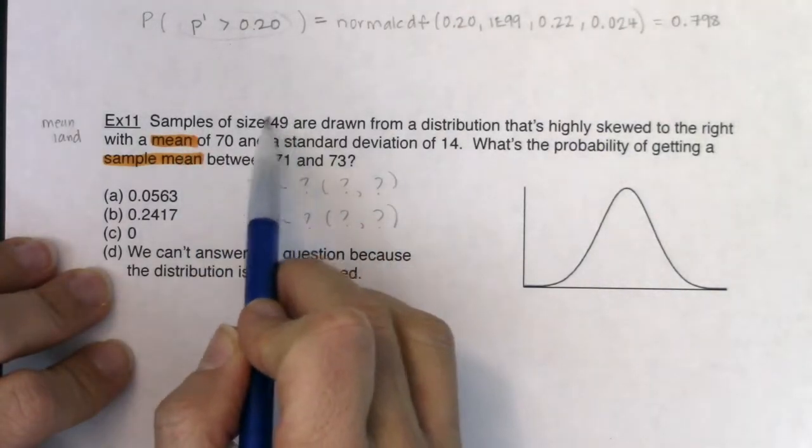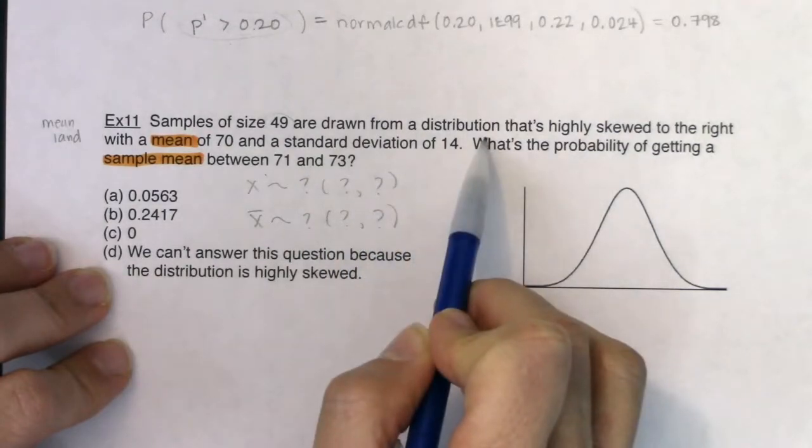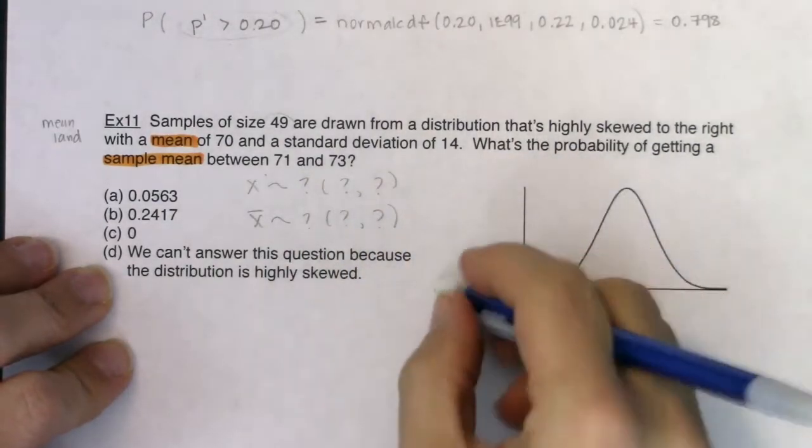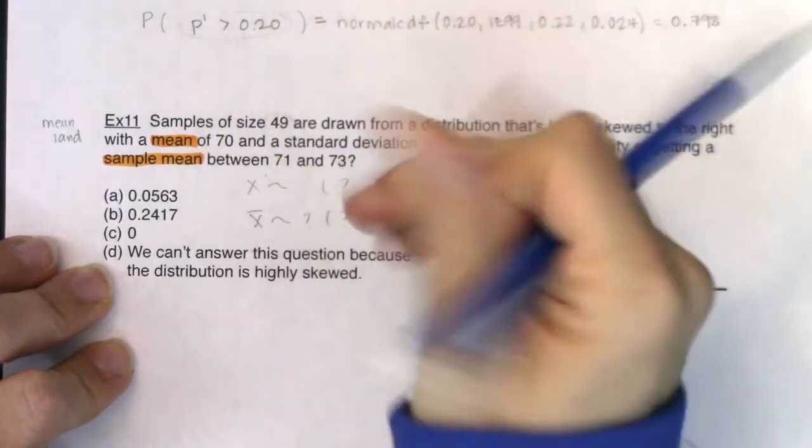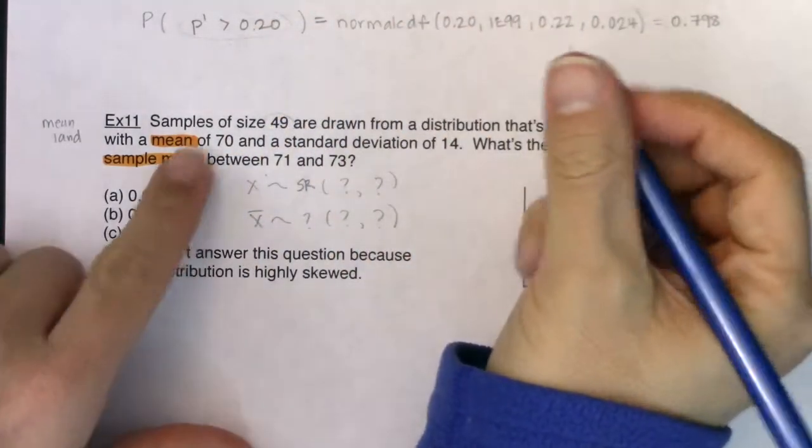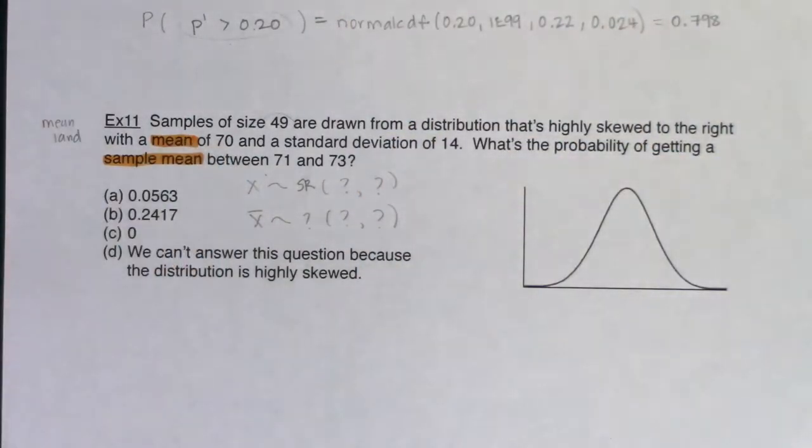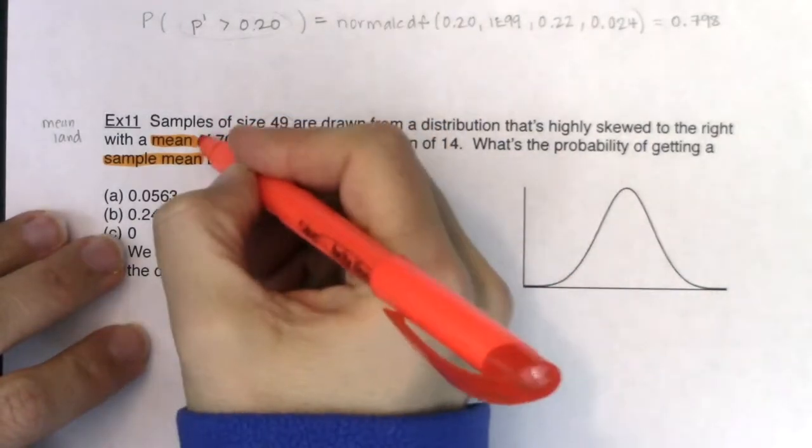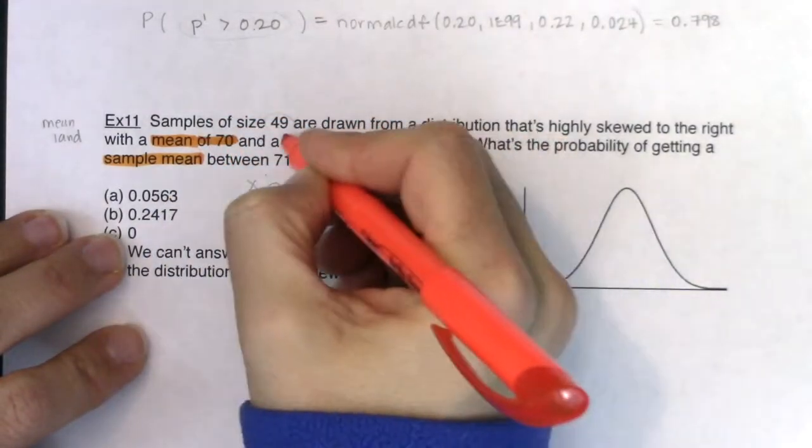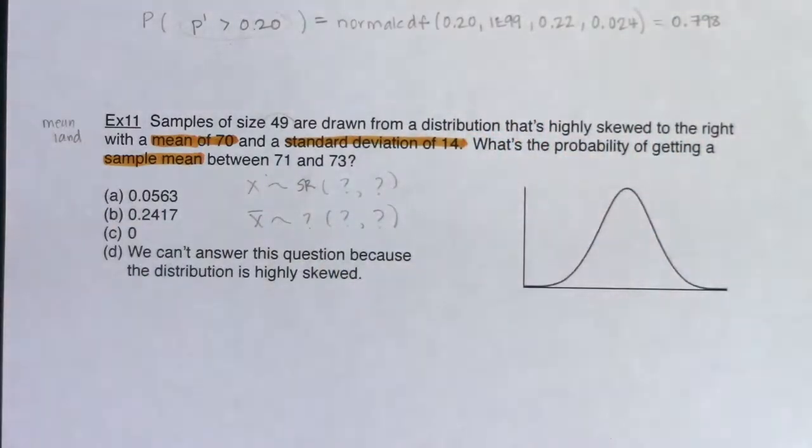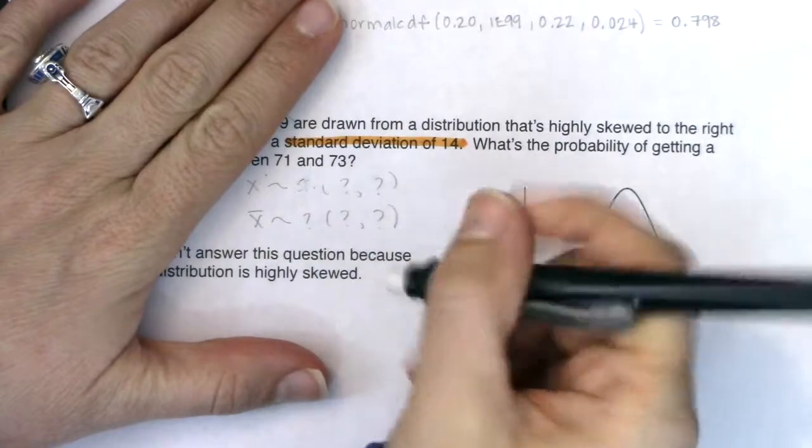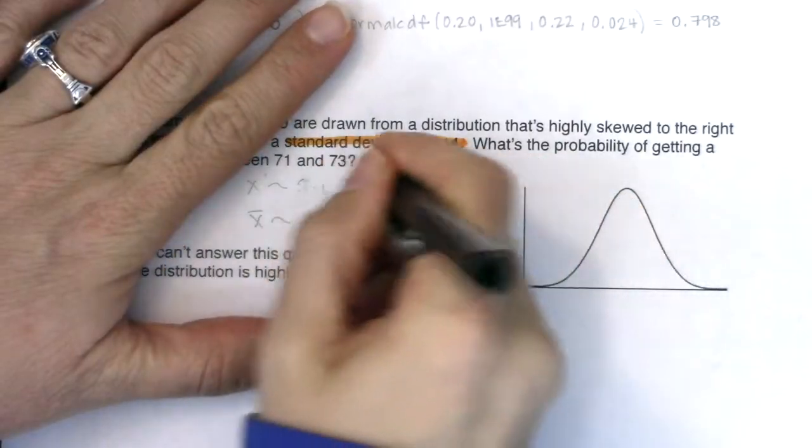It says samples of size 49 are drawn from a distribution, a population distribution that is highly skewed right. So I know my population distribution is skewed right, but I know the mean is 70. I didn't highlight this word. Now that I'm looking at it, that's a good one to highlight. So mean of 70 and standard deviation of 14. So let's go ahead and put those in. I've got skewed right, mean of 70, standard deviation of 14.